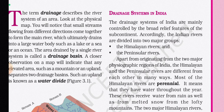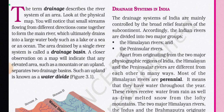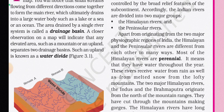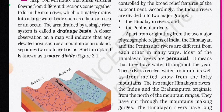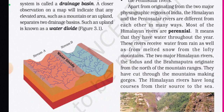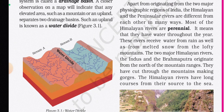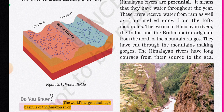The drainage systems of India are mainly controlled by the broad relief features of the subcontinent. Accordingly, Indian rivers are divided into two major groups: the Himalayan rivers and the Peninsular rivers. Most of the Himalayan rivers are perennial — they have water throughout the year, receiving water from both rainfall and melted snow from the lofty mountains.